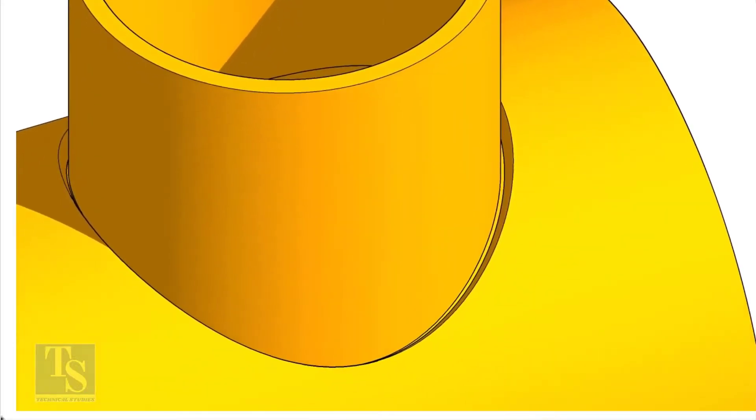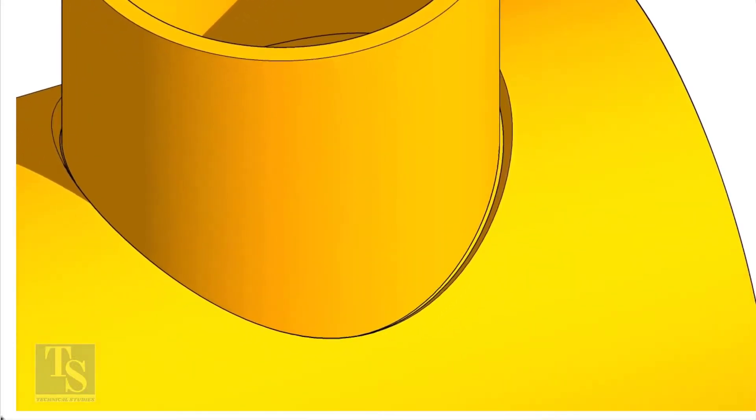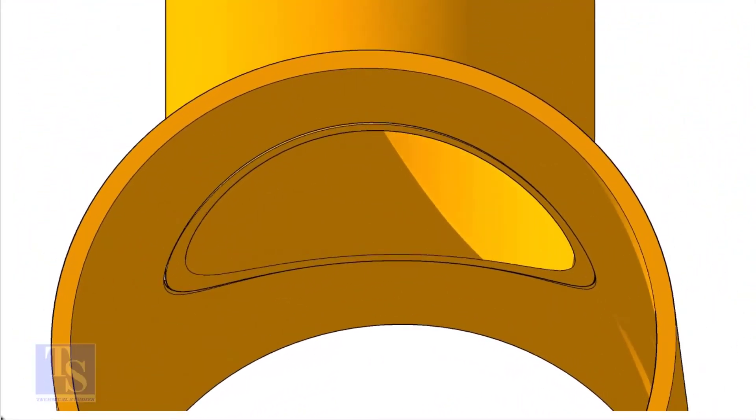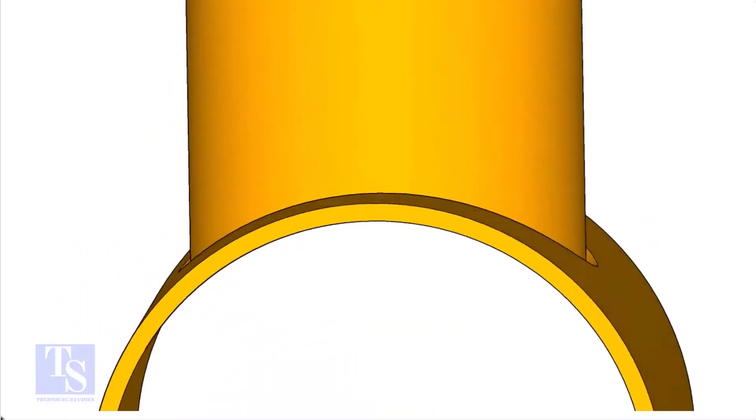On the branch pipe, there is no bevel preparation, but the cut-back cut is done. The end of the branch is level with the inside diameter of the header pipe.